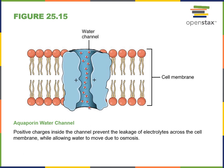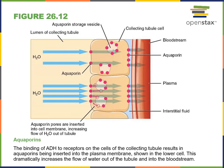Aquaporin channels are proteins that enable facilitated diffusion of water. In response to antidiuretic hormone, the epithelial cells of the collecting duct and distal convoluted tubule increase the number of aquaporin channels. This increased expression of aquaporins is responsible for increasing water reabsorption, leading to the small volume of concentrated urine produced in response to antidiuretic hormone.